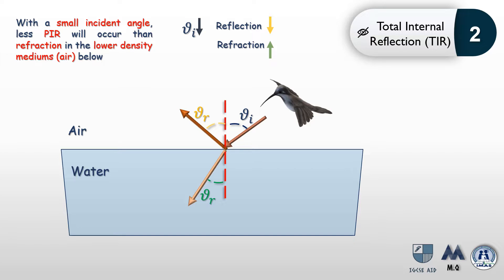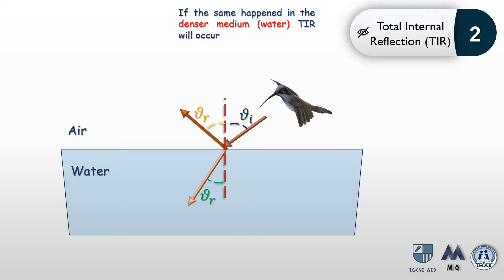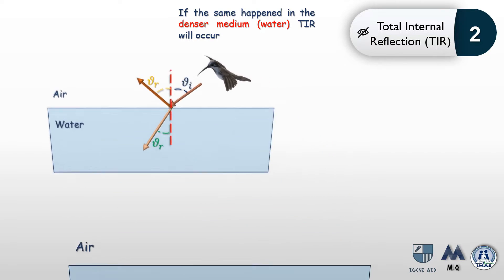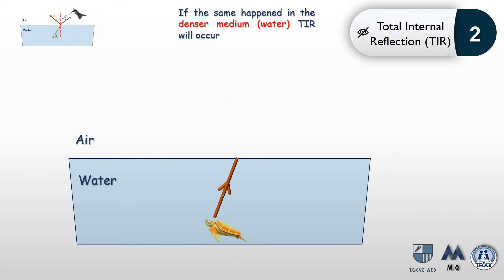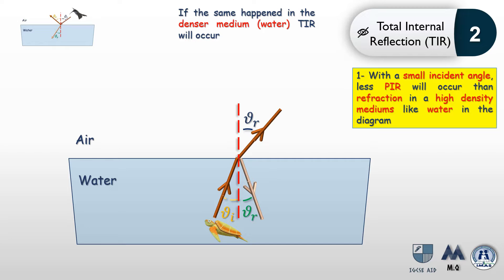Up to this point, we were talking about light coming from an object in air, the lower density medium. If we change the setting and look at an incident ray in a denser medium, such as water, we observe total internal reflection. Taking a light ray from the turtle towards the surface of water, a large portion refracts away from the normal, while a smaller portion internally reflects in water.